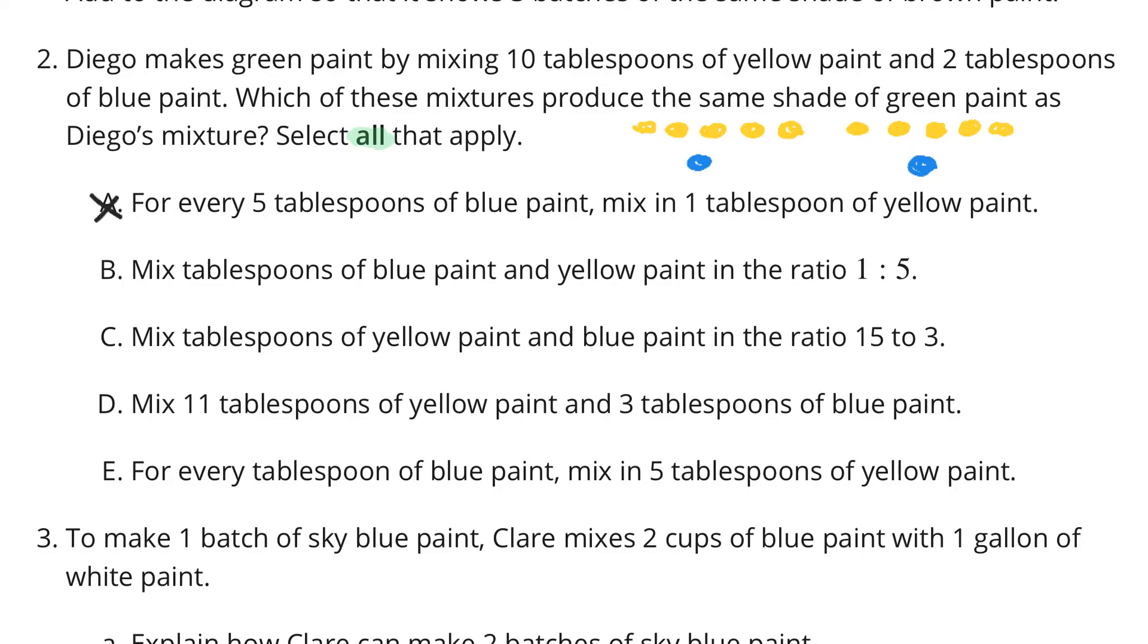What about B? Mix tablespoons of blue paint and yellow paint in the ratio of one to five. That's saying one blue to five yellow. Do we have one blue to five yellow? We do. So, B is a possibility.